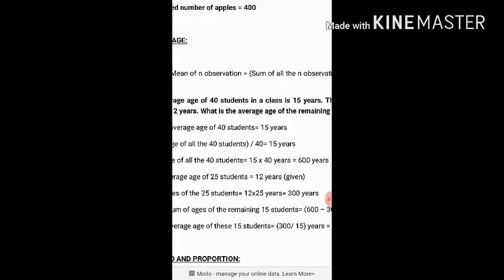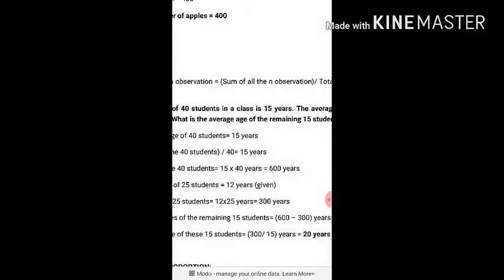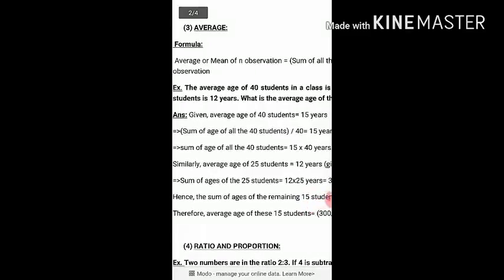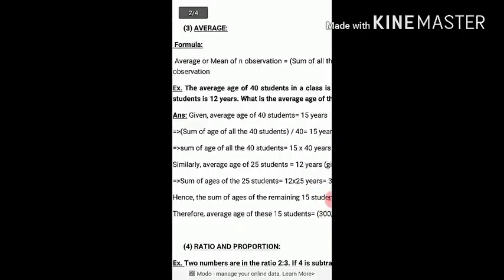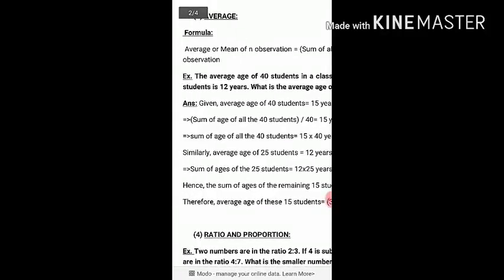The average equals the sum of all the ages of the 40 students divided by the total number of students, which is 40. According to the question, the average value is 15 years. So we write: sum of ages of all 40 students divided by 40 equals 15 years. This denominator is 40. Therefore, the sum of ages of all 40 students equals 15 into 40, which means 600 years. So the total age of 40 students is 600 years.